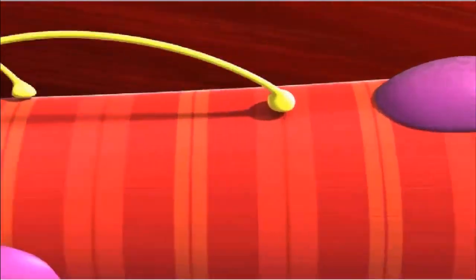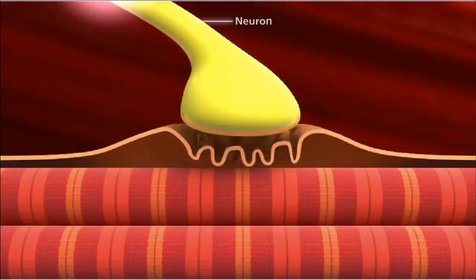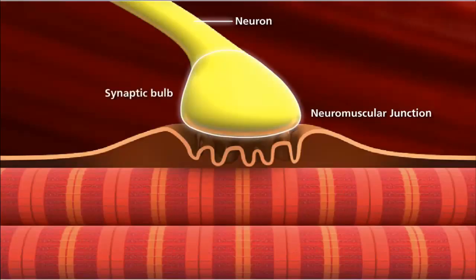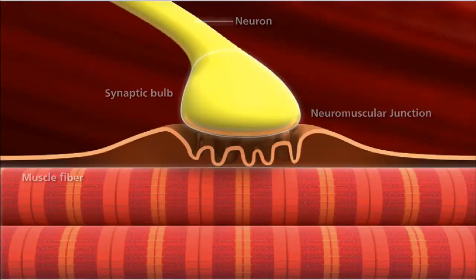Muscles will contract or relax when they receive signals from the nervous system. A neuromuscular junction is the site of the signal exchange. This is where the synaptic bulb of an axon terminal and muscle fiber connect.